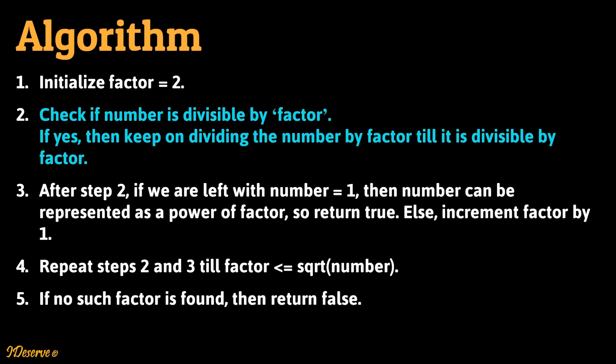Check if number is divisible by factor. If yes, then keep on dividing the number by factor till it is divisible by factor. After step 2, if we are left with number equal to 1, then number can be represented as a power of factor, so return true. Else increment factor by 1.